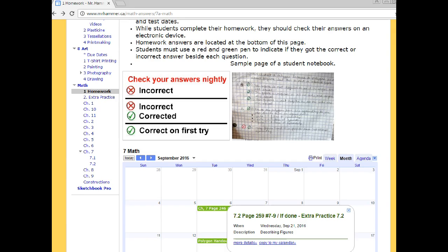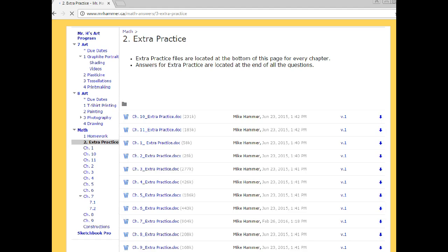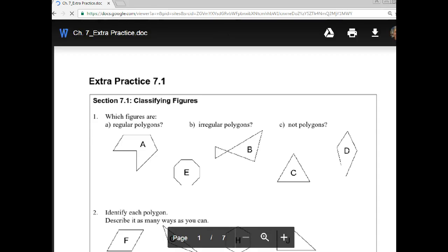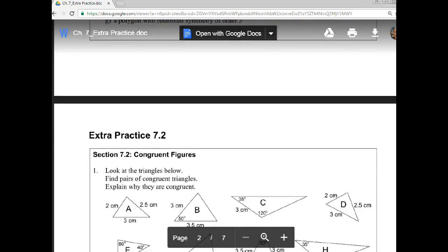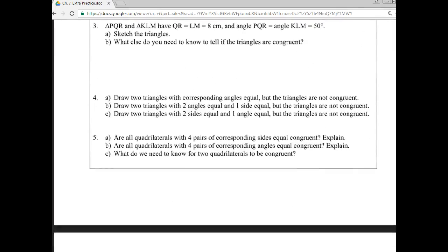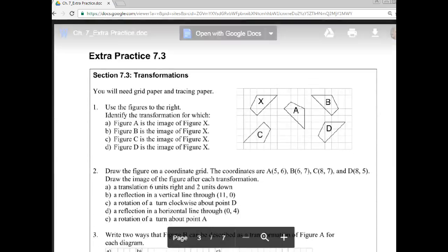So that's the homework page. Finally, we also have extra practice homework. That's on the left side menu here as well. So sometimes I assign extra practice, which is not in the textbook. They would go to the appropriate section. So for example, chapter 7. And there's extra practice for section 7.1. It's one page of questions. Here's extra practice for 7.2. It's another full page. It's always one full page of extra practice questions.